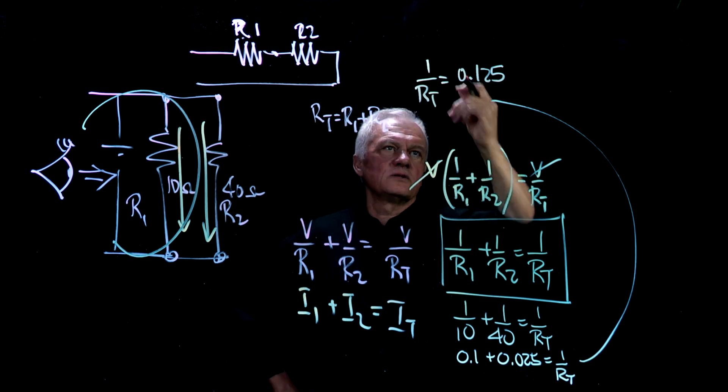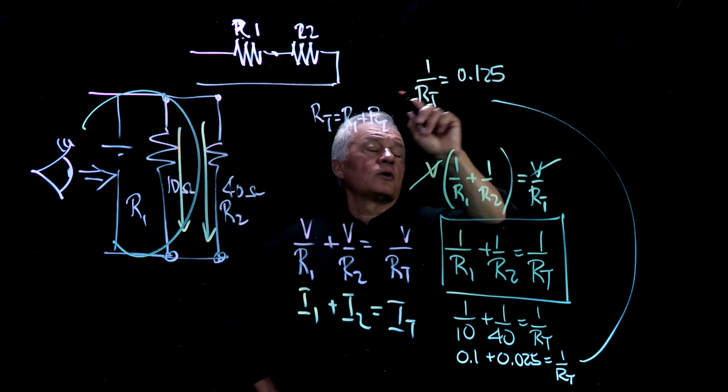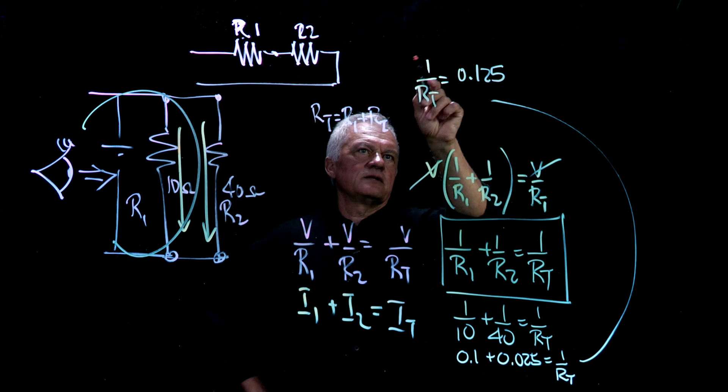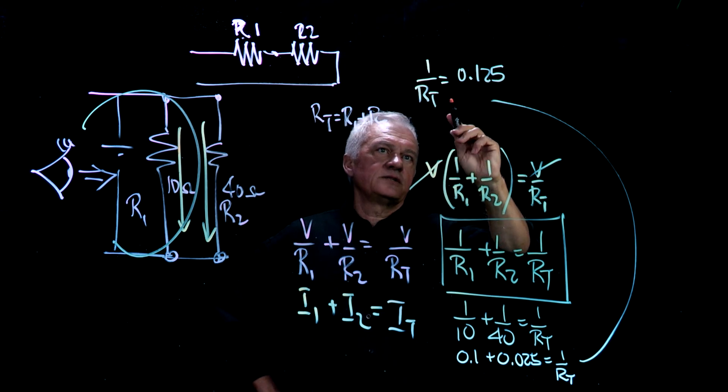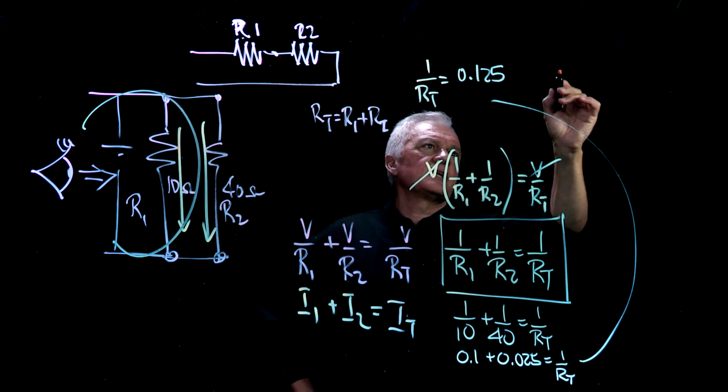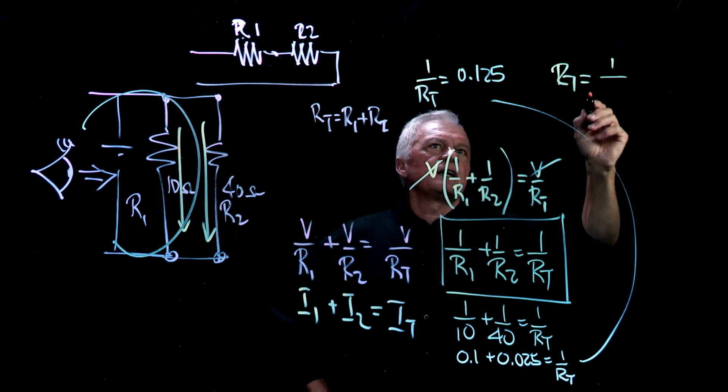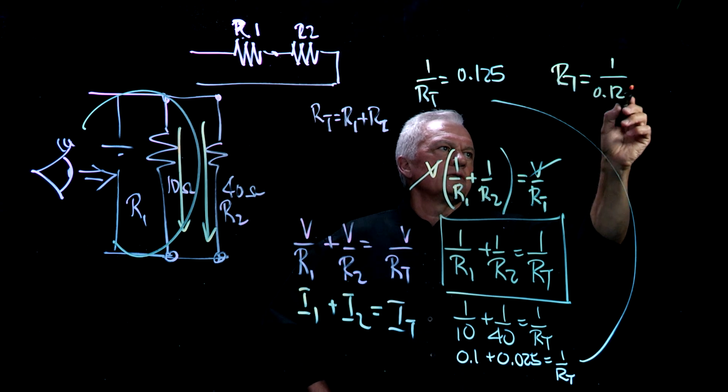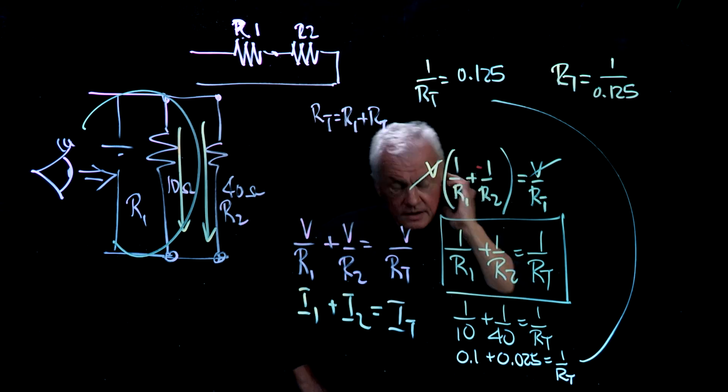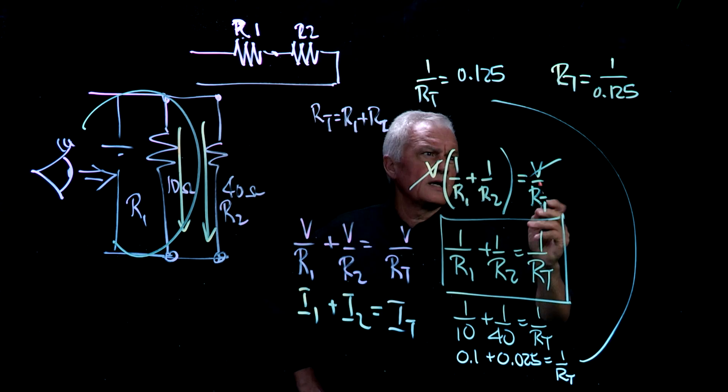Now this is 1 over the total, which means if I want to know the total, I have to divide. In this case here, sorry, I have to multiply the top and bottom here by RT or invert it, let's say. Let's just flip it. So that means that RT is equal to 1 divided by 0.125. If you check that out, that will equal 8 ohms.